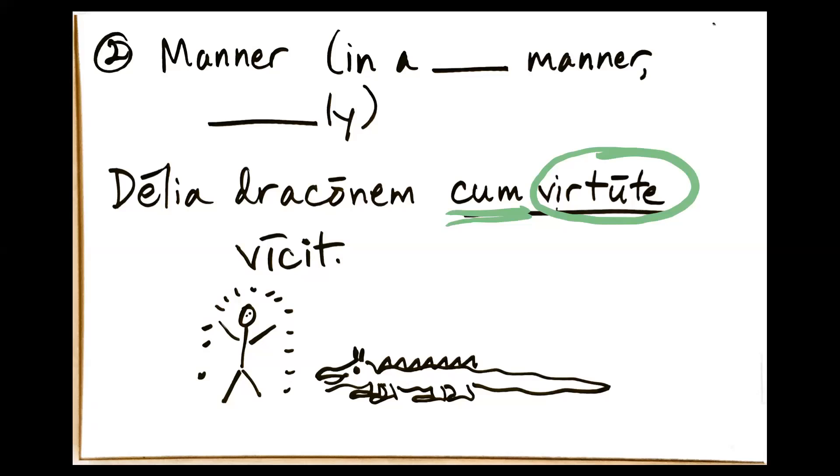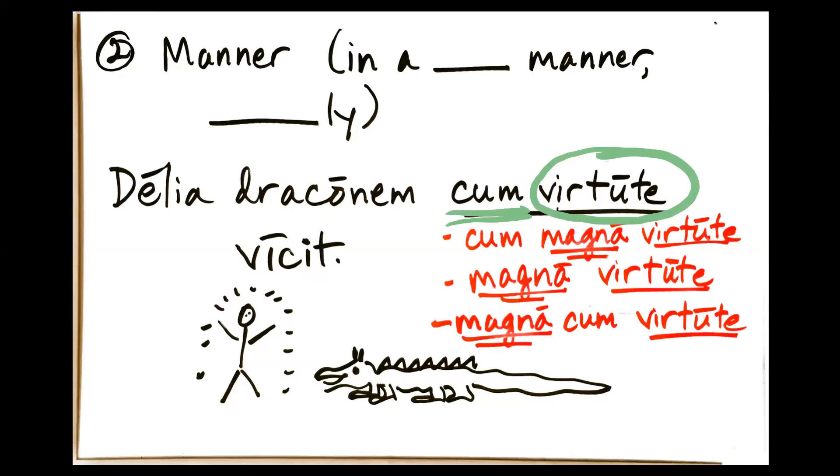However, maybe Delia conquered the dragon with great courage, in a very courageous manner. So, you'll see this expressed maybe in three different ways that are possible. One is cum magna virtute, where you still have the cum and you have the adjective and the noun.